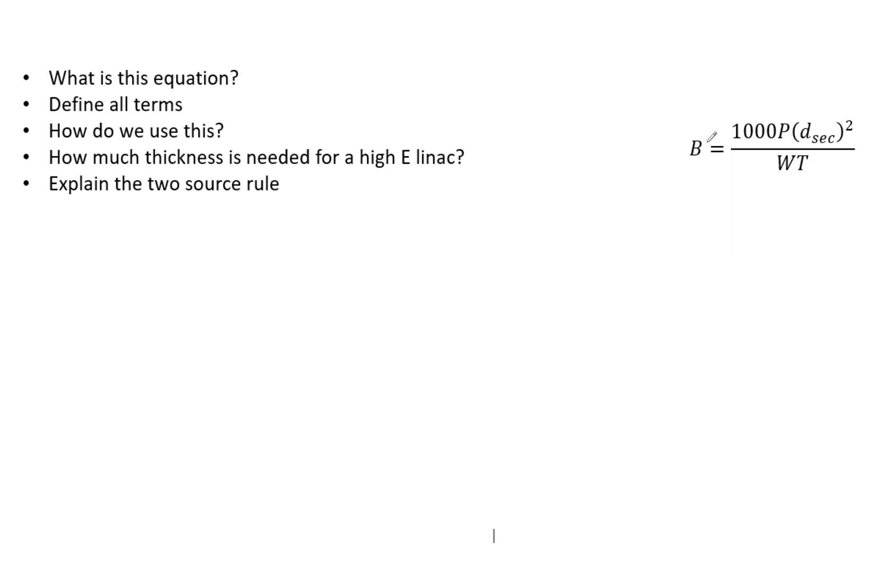So right here, we see the B. That means that this is a barrier transmission factor, and this is for leakage. So typically, this is designated by BL. So that's just a factor for leakage.